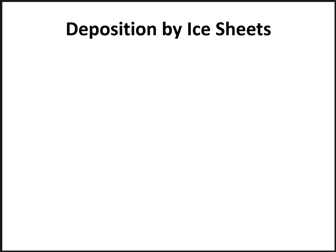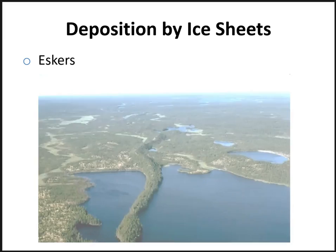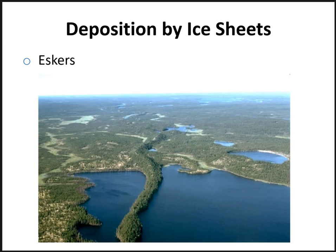The final type of depositional feature is eskers — sinuous ridges of glacial fluvial material that form in tunnels in an ice sheet. The sides of the tunnels act as part of a channel for meltwater; as the glacier recedes, the support for the stream is removed, and the stream deposits its load into this long ridge-like form. Eskers are a great source of sand and gravel. Here's an esker from northwest Manitoba composed of sand and gravel — a long channel ridge that kind of reminds me of a gigantic mole run.